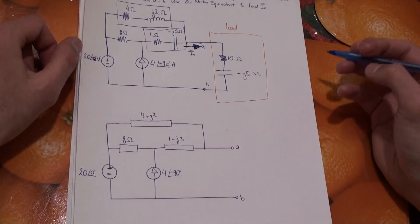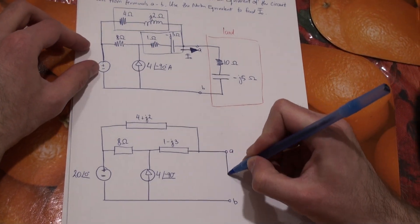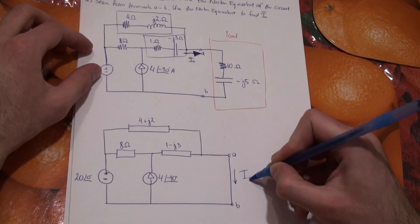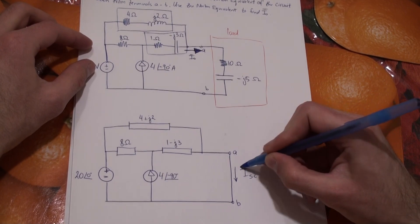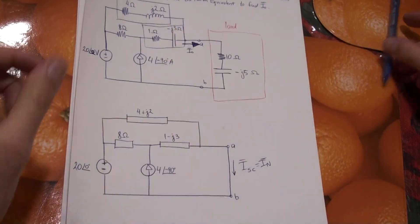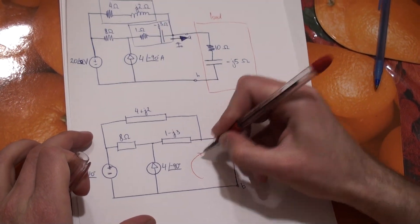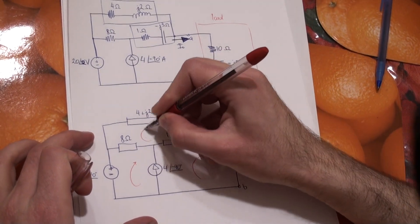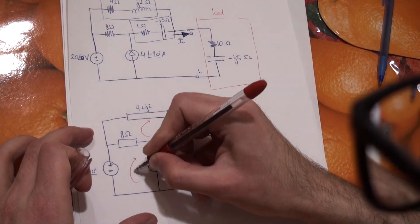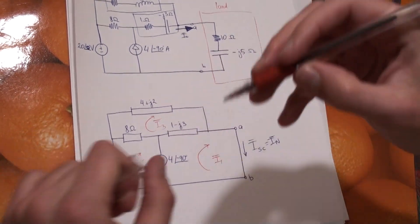Here are terminals A and B. To find the Norton equivalent, we need to find the short circuit current between points A and B — this is I short circuit, which is the same as I Norton. We can use mesh analysis, with mesh currents I1, I2, and I3.